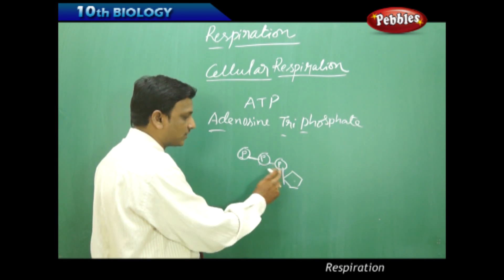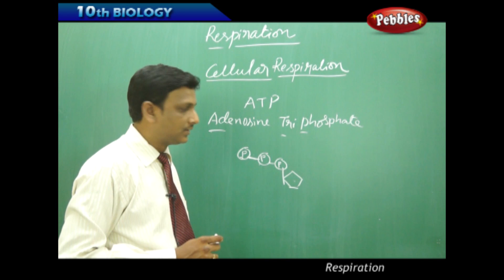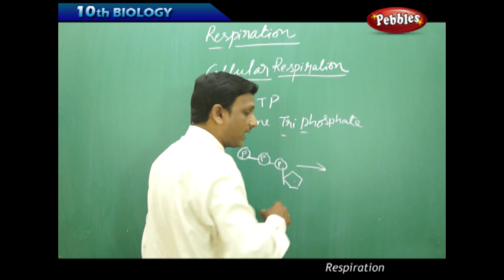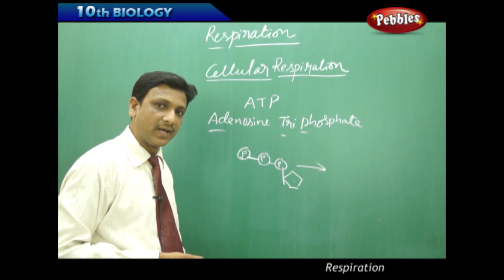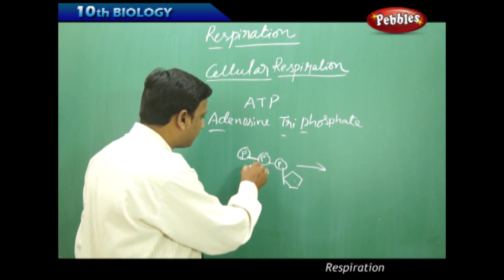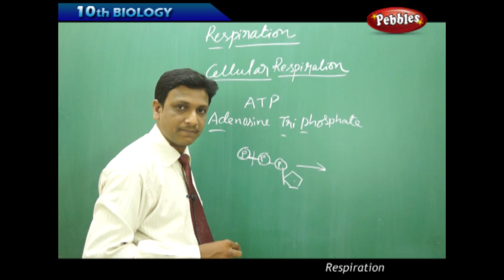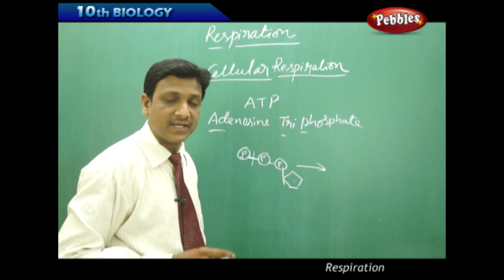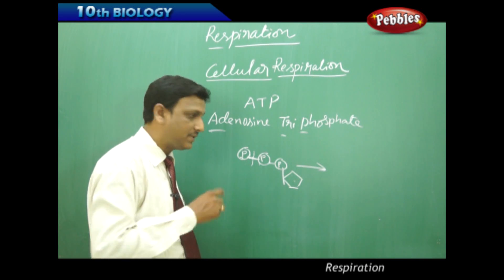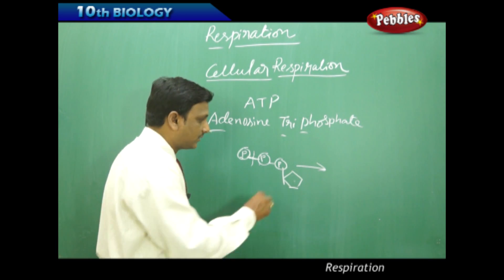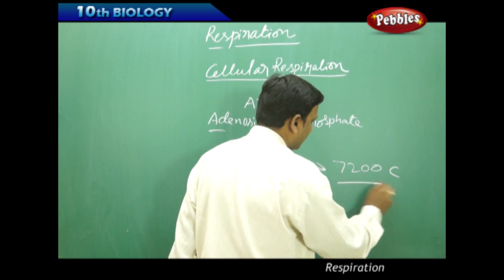This is adenosine triphosphate. Whenever and wherever energy is required inside the cells, ATP is supplied. In the ATP, this phosphate bond breaks and energy is released. By breaking one phosphate bond in ATP, 7200 calories of energy is released.